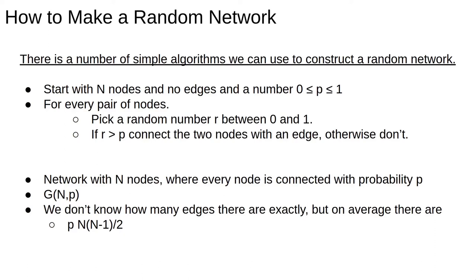This network is so common it has a special name, G(N,p), and is sometimes called an Erdos-Renyi graph after the two mathematicians who studied it extensively.